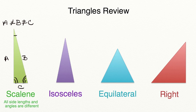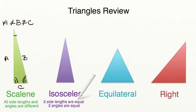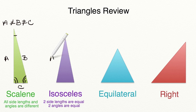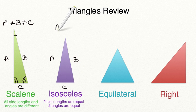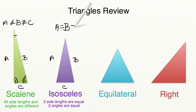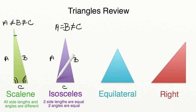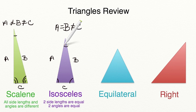Let's look at an isosceles triangle. An isosceles triangle has two side lengths that are equal and two angles that are also equal. So if we have side lengths A, B, and C, side lengths A and B are going to be equal to each other, but they're going to be different from that third side length C. We're also going to have two angles that are the same, and that third angle is going to be different.